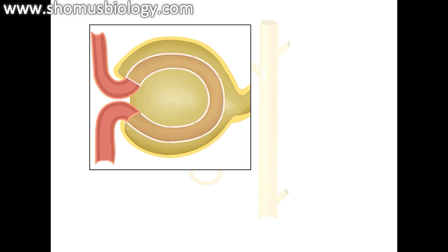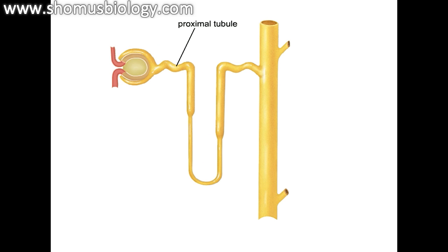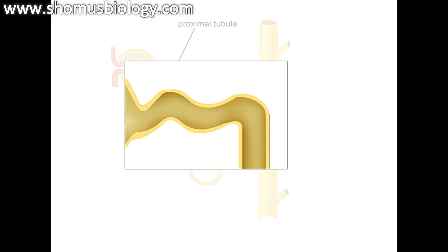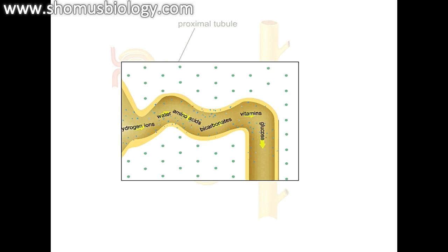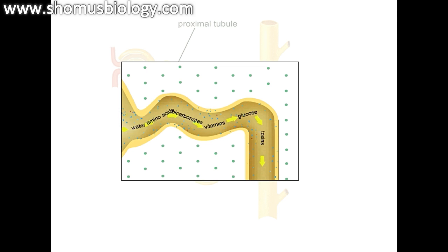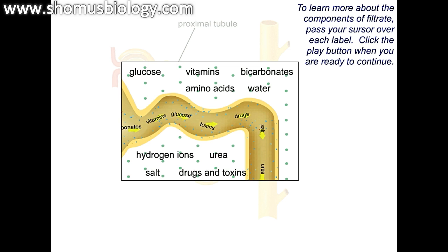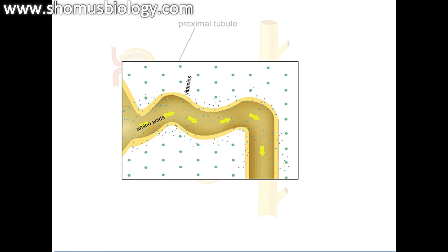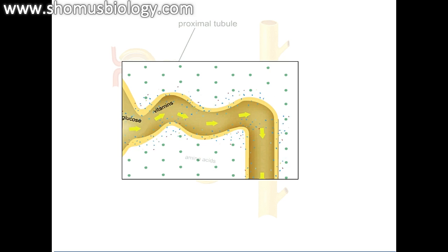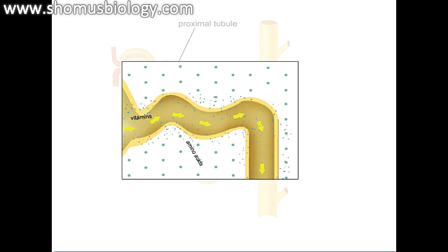The permeability of the glomerulus selects molecules for inclusion in the filtrate based on their size and potential value. Many important nutrient molecules that enter the filtrate must be actively pumped out of the nephron and back into the blood — this process is known as tubular reabsorption. Although tubular reabsorption occurs along the entire length of the nephron, the bulk of this process takes place in the proximal tubule, where many important materials are reabsorbed from the filtrate back into the blood.